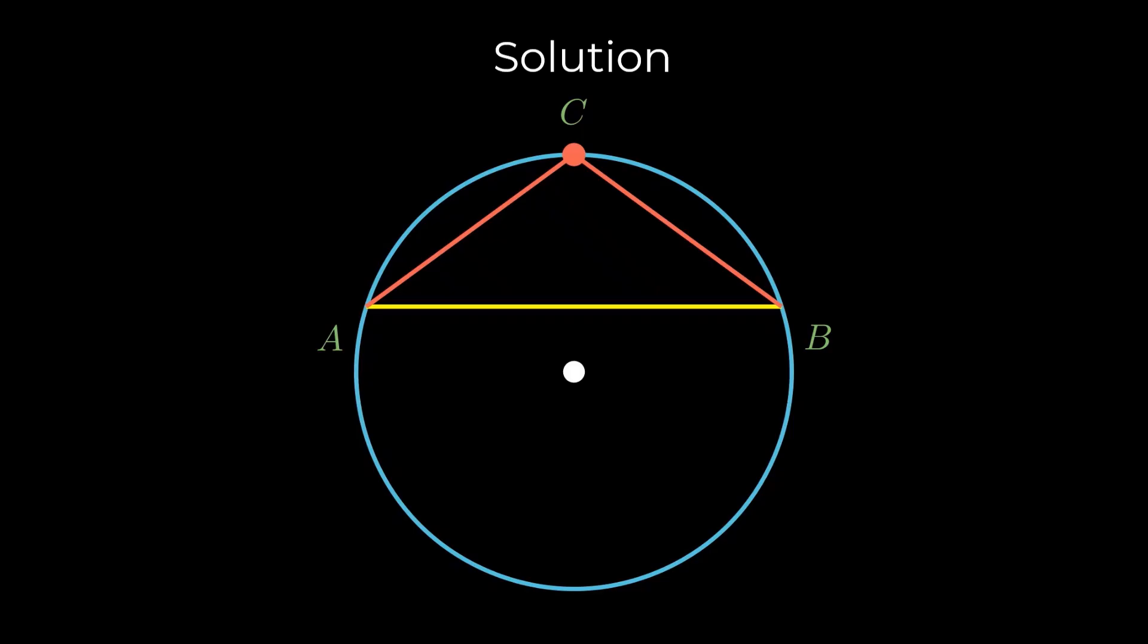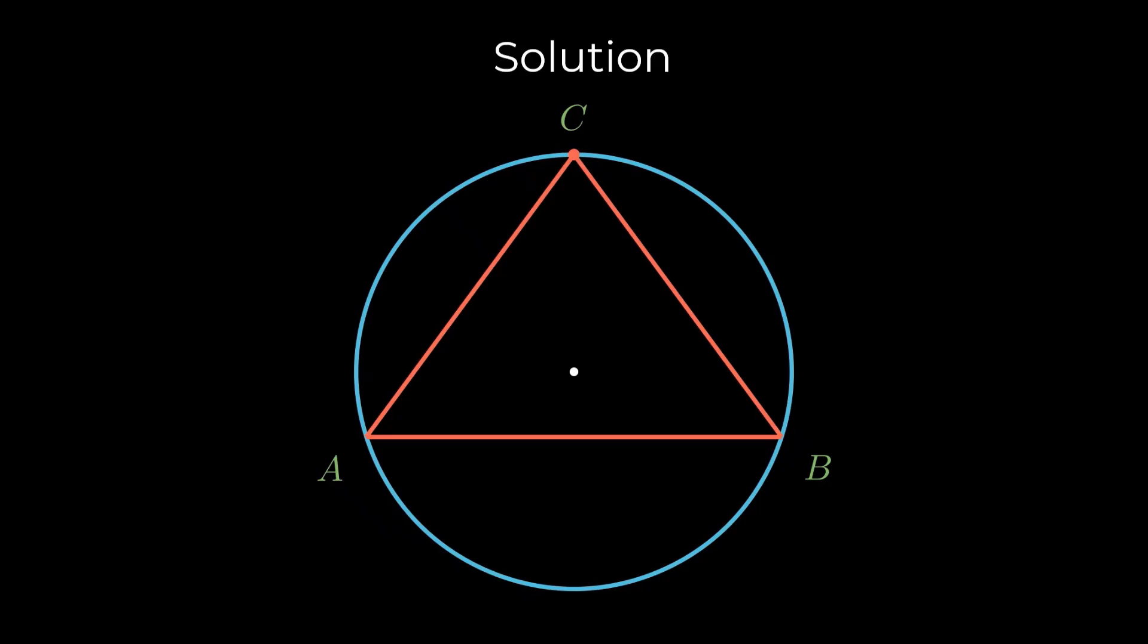Therefore, for a triangle to be acute-angled, no side can have this property. This implies that the center of the circle must lie strictly inside the triangle.